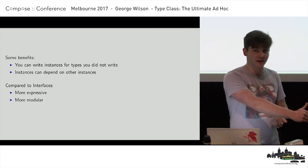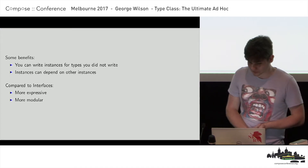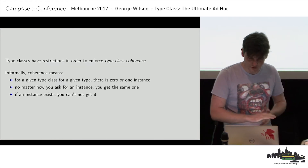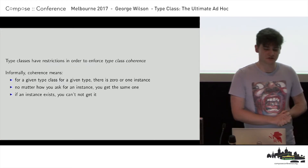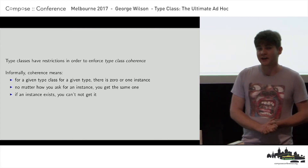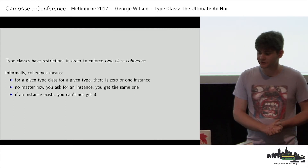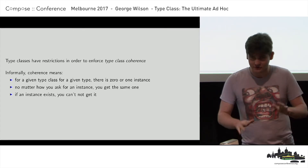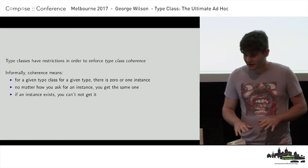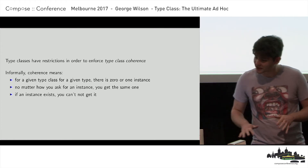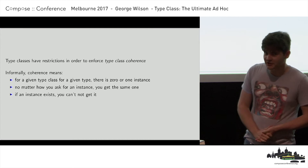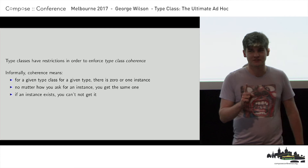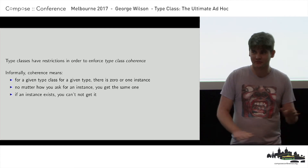Now they're not 100% flexible — it's not a free for all. We have some restrictions, and the reason we have them is to enforce something called type class coherence. Informally, it basically means: for a given type class, for a given type, there are zero instances or there is one instance, and nothing else could be possible. There is zero or one of these things.